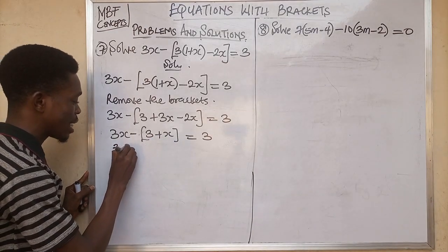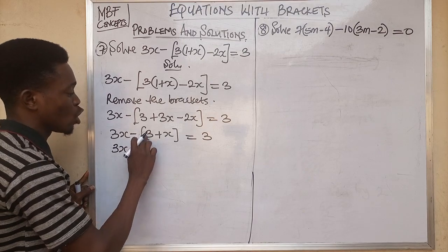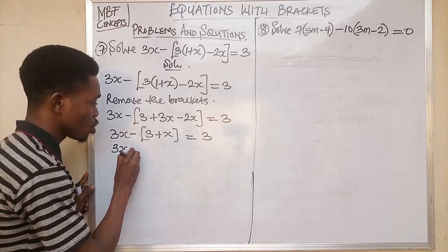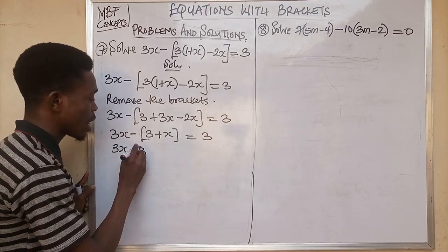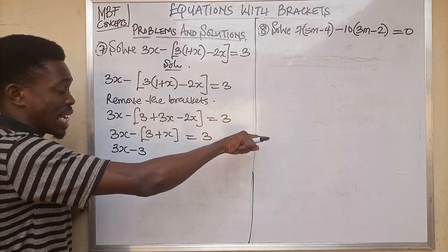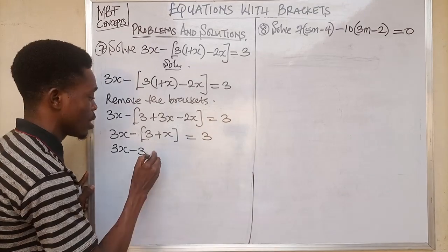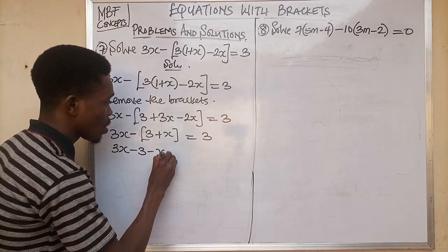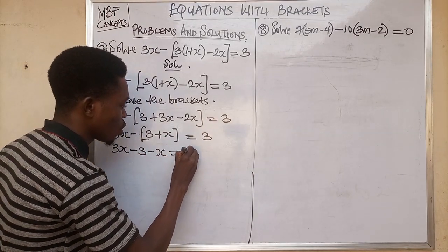Therefore we use minus 1 to open this bracket. Minus 1 times 3 gives us minus 3, and minus 1 times plus x gives us minus x. So we have 3x minus 3 minus x equal to 3.